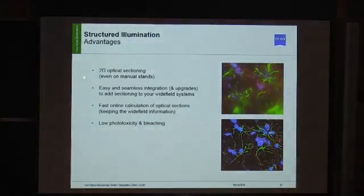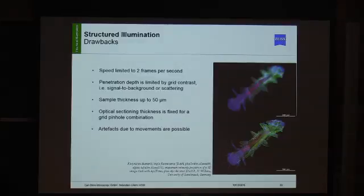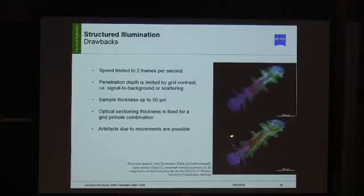The advantages of structured illumination are that you only need 2D optical sectioning, it's easy to use, relatively fast for acquiring sections, and it's very low with respect to phototoxicity and photobleaching as a camera-based system. The drawbacks: the system is relatively slow because you need multiple images per section — about 2 frames per second is the realistic maximum — so you cannot observe fast processes. Structured illumination is best suited when structures are fixed and nothing moves. Penetration depth is limited by grid contrast, and our recommendation is not to use samples thicker than 50 micrometers. Movement artifacts from vibrations can also be a problem.